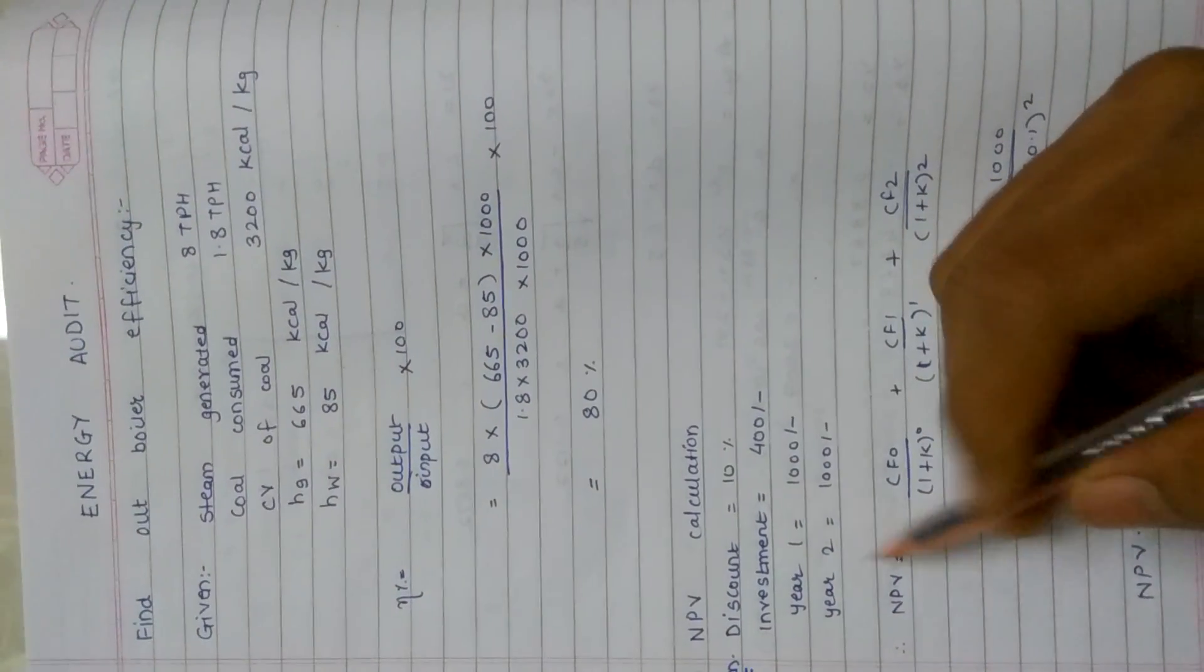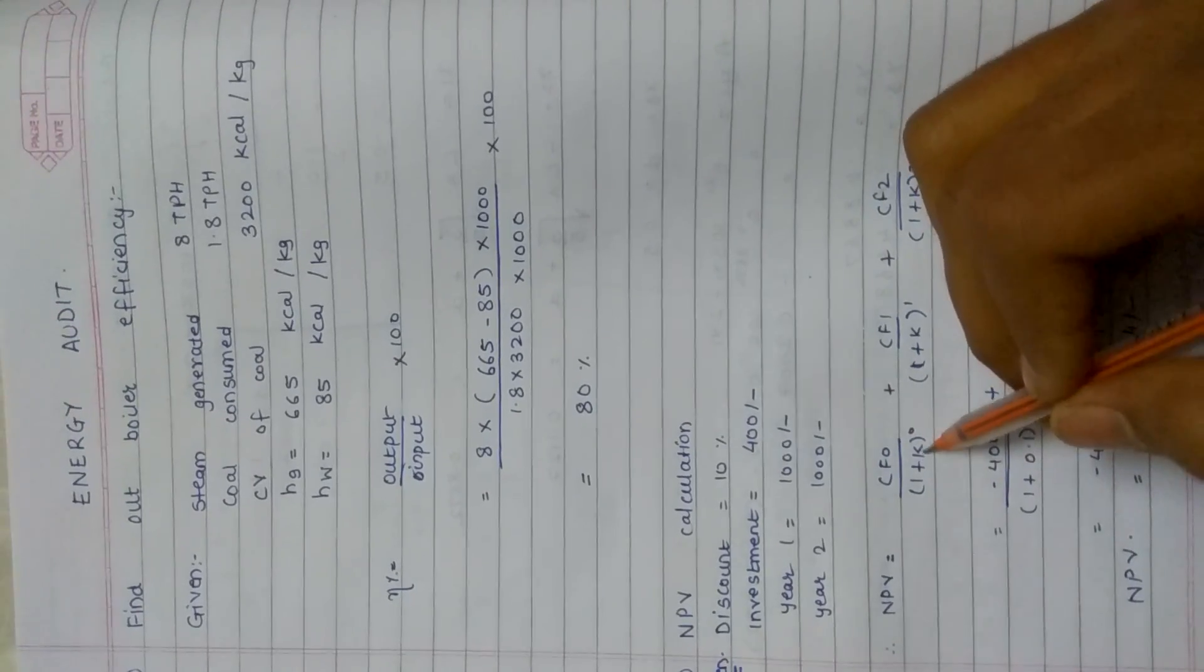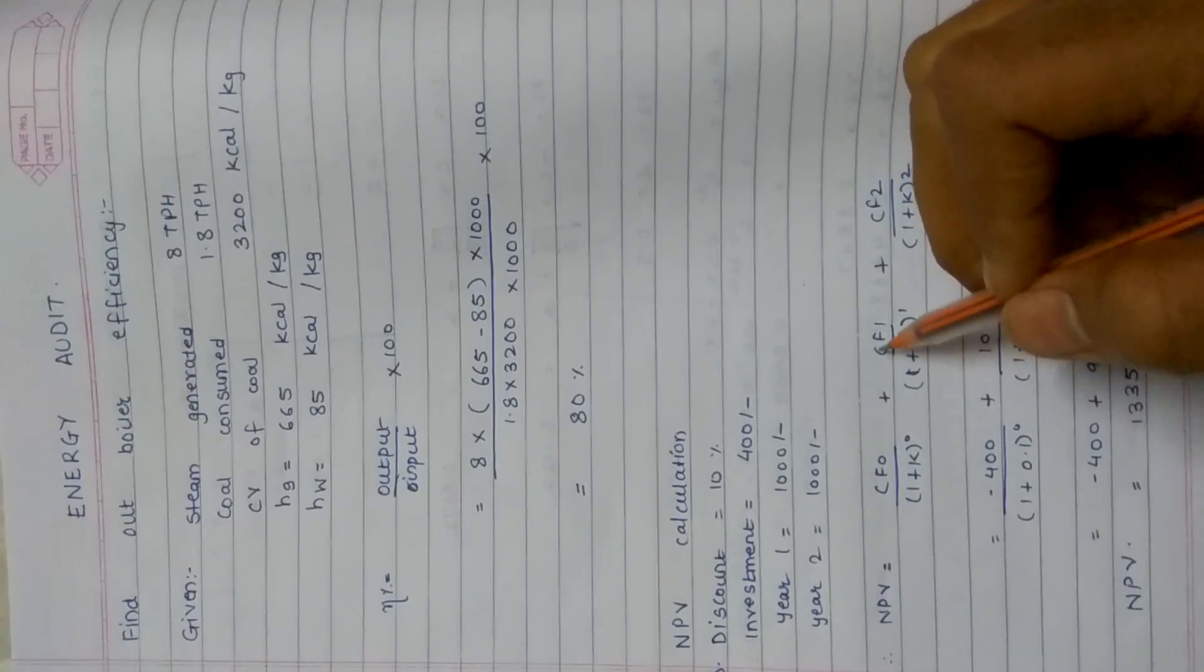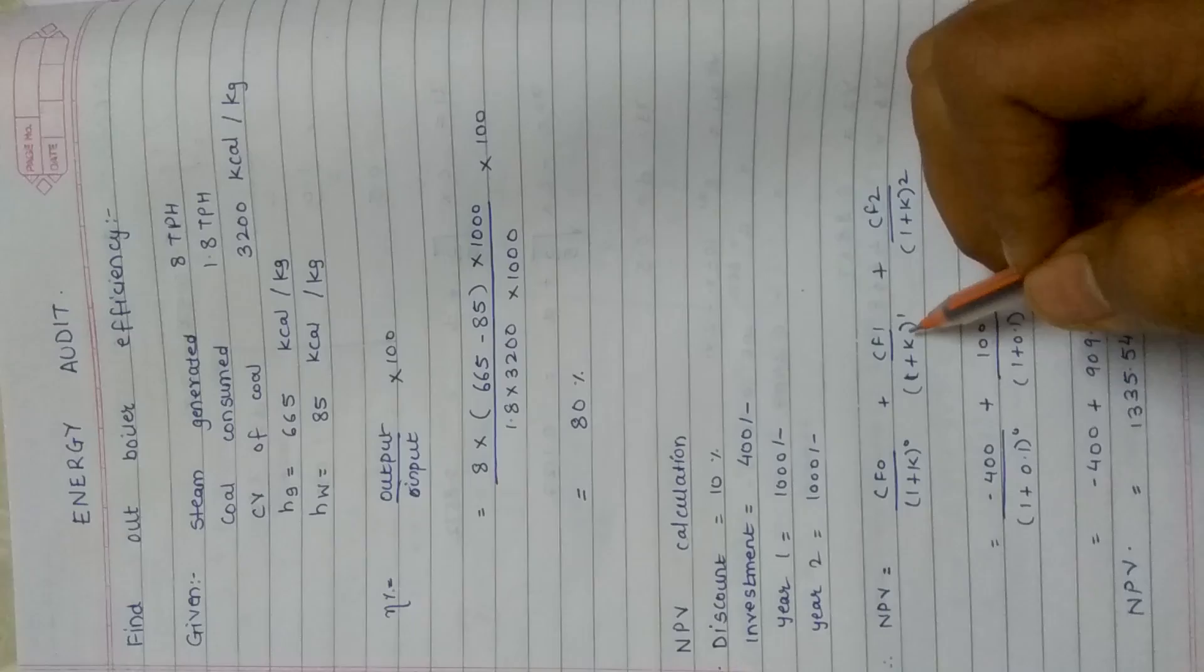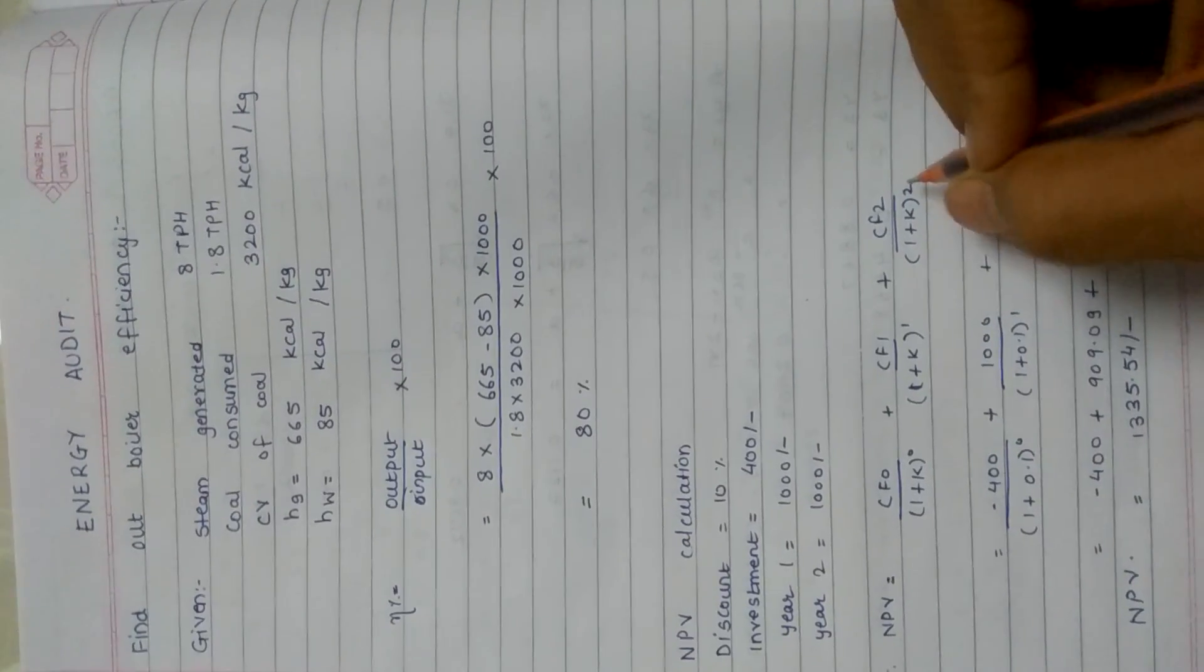The net present value has a definite formula: cf0 upon (1 plus k) raise to 0 plus cf1 upon (1 plus k) raise to 1 plus cf2 upon (1 plus k) raise to 2, and so on up till n.